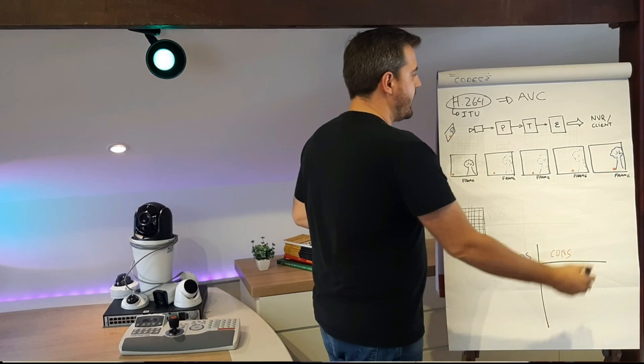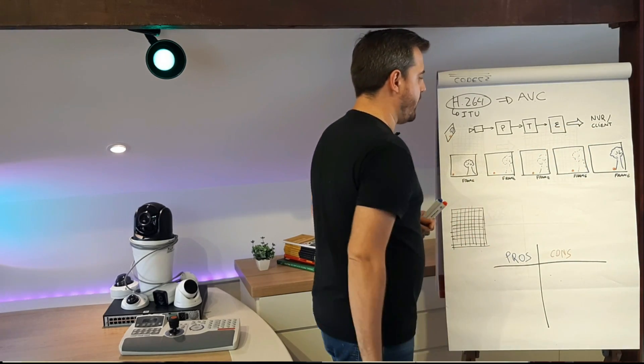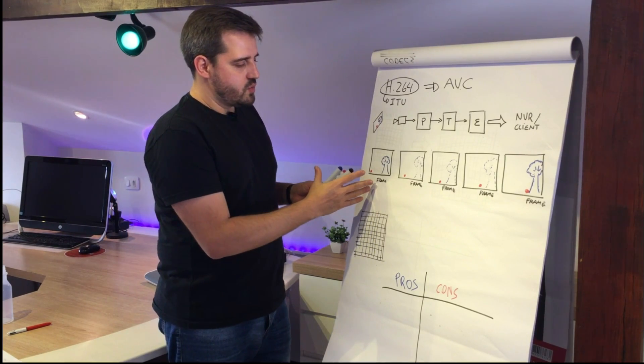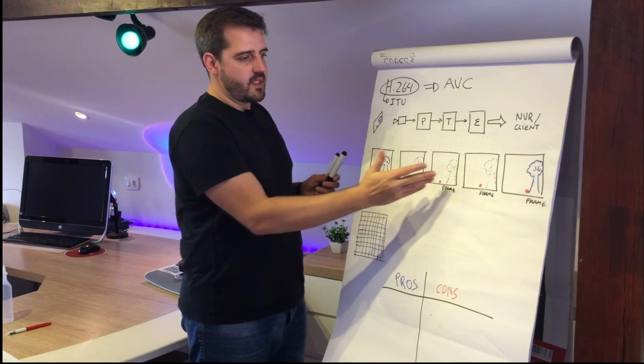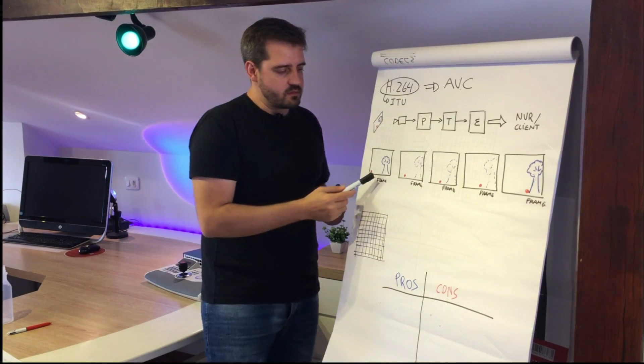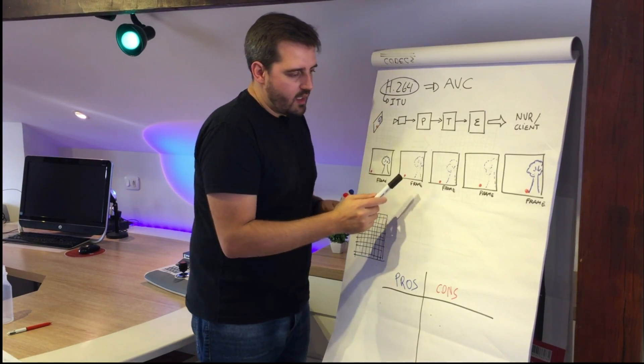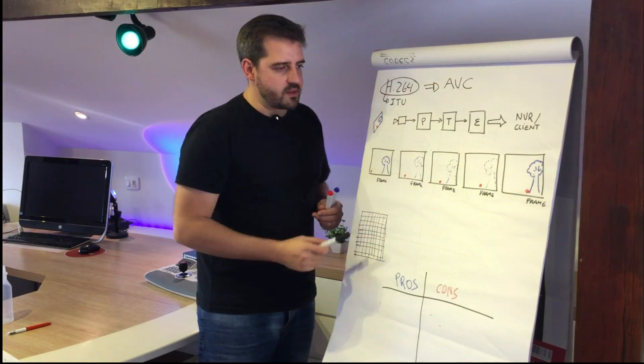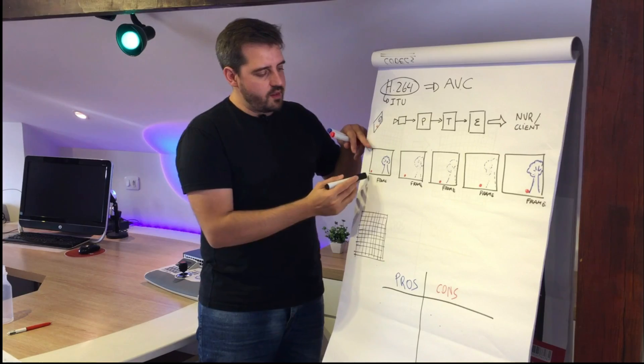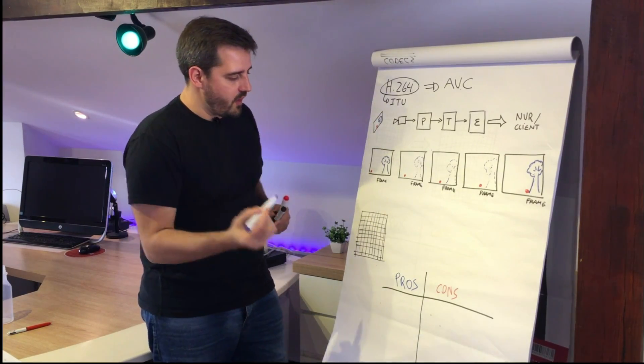After that it will send to the NVR and client. Let's see an example here of the scene. We have a background and we have a ball passing through the scene. Initially, the first one here we'll call the I-frame.